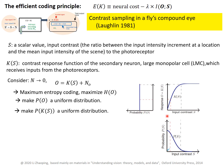Why is this so? This is because for the more probable input contrast, it maps through this very stretchy region of the response function — it stretches a small range of input to a large range of output. For higher contrast, which is less likely, it goes through the less stretchy region and maps into a smaller range of output. So you can use these stretchy sensitivities to map a non-uniform distribution of input to a more uniform distribution of output.